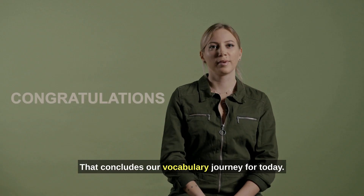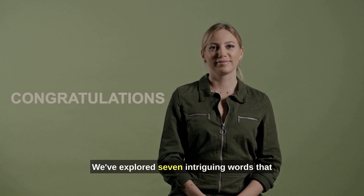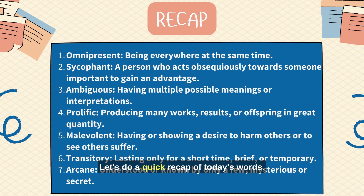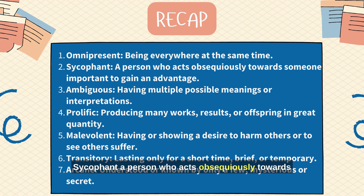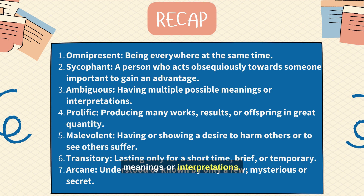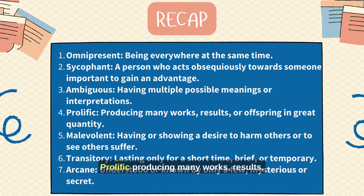That concludes our vocabulary journey for today. We've explored seven intriguing words that will undoubtedly enhance your language skills. Let's do a quick recap: Omnipresent — being everywhere at the same time. Sycophant — a person who acts obsequiously towards someone important to gain an advantage. Ambiguous — having multiple possible meanings or interpretations. Prolific — producing many works, results, or offspring in great quantity.